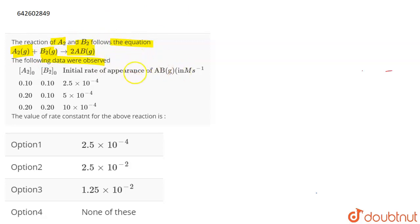Now, you're given the initial concentrations of the reactants and the initial rate of appearance of AB gas. So, if we look at this equation, which is A2 gas plus B2 gas gives 2 AB gas. Now, from here,